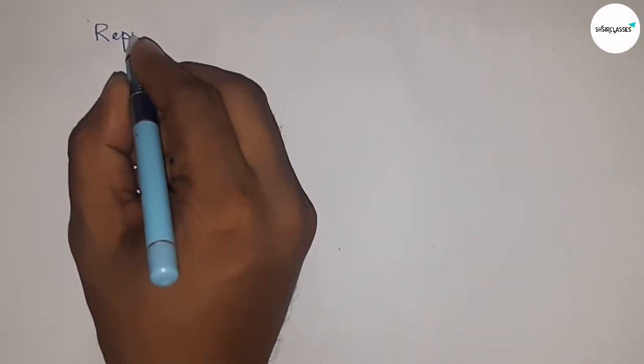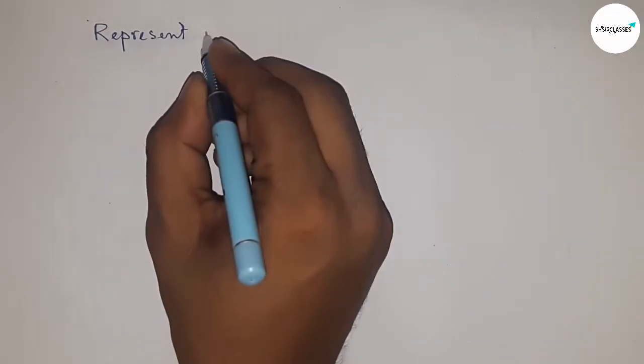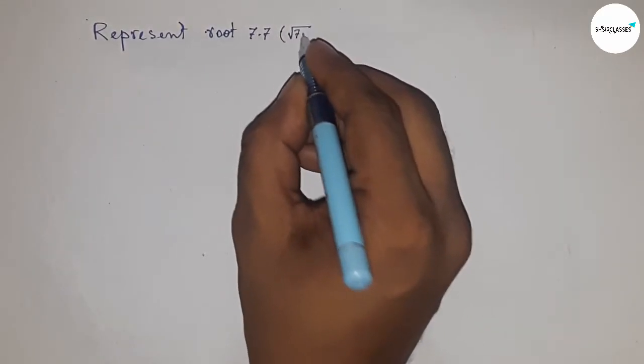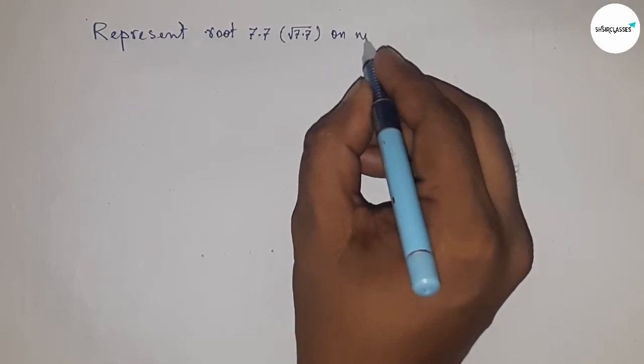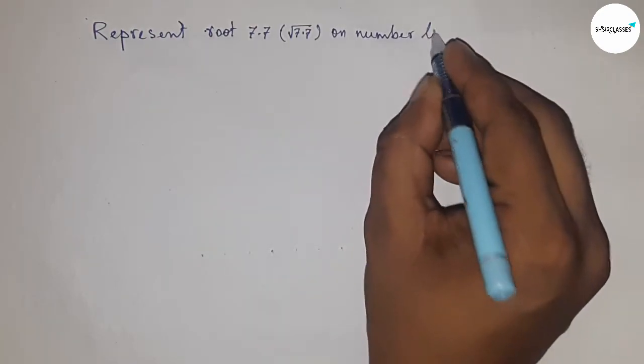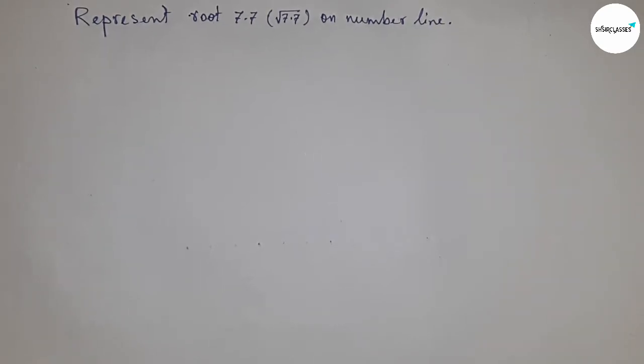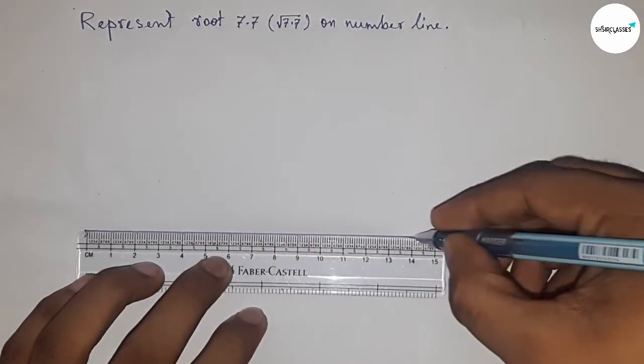Hi everyone, welcome to Sister Classes. Today we're talking about how to represent √7.7 on a number line. In this video, we'll be learning to represent √7.7 on a number line. Let's start.